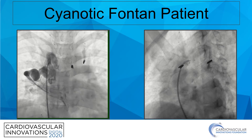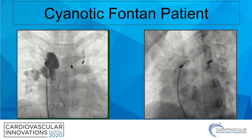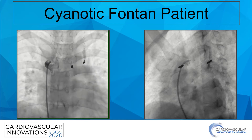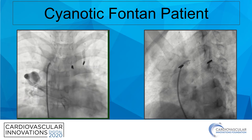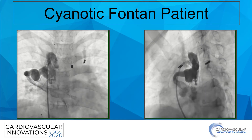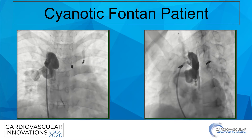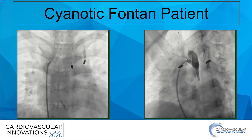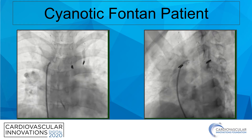This is an example of one of those vascular abnormalities that can form in Fontan patients. This particular patient presented with cyanosis. What you see here is called a venovenous collateral — a venous structure that originates somewhere along the systemic venous system and terminates with drainage into the pulmonary venous system, providing a source of cyanosis for these patients.